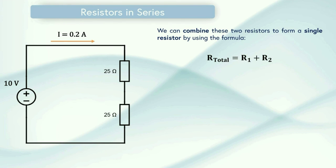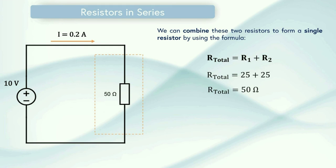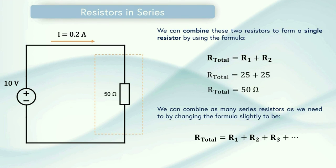We can combine these two resistors and replace them with a single resistor by using the formula R_total is equal to R1 plus R2. So R_total is the single resistor that we're going to replace these with. R1 is the first resistor and R2 is the second resistor. We can substitute the values of R1 and R2 into our equation, which are both 25 ohms as we can see from the diagram, and this gives us a total resistance of 50 ohms. So what we can do is we can take these two resistors and replace them with one single 50 ohm resistor and it's equivalent. We can combine as many series resistors as we need to by changing the formula slightly to be R_total is equal to R1 plus R2 plus R3 plus however many resistors you have connected in series.